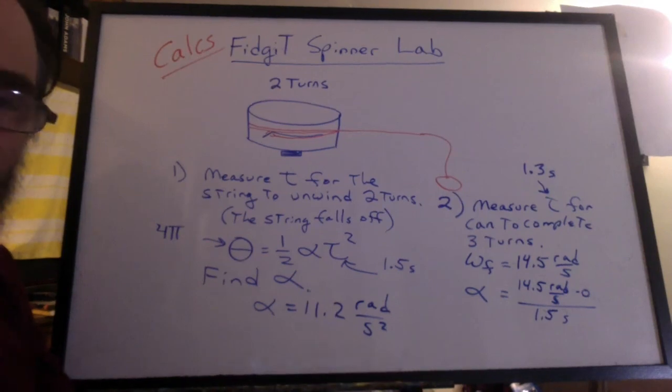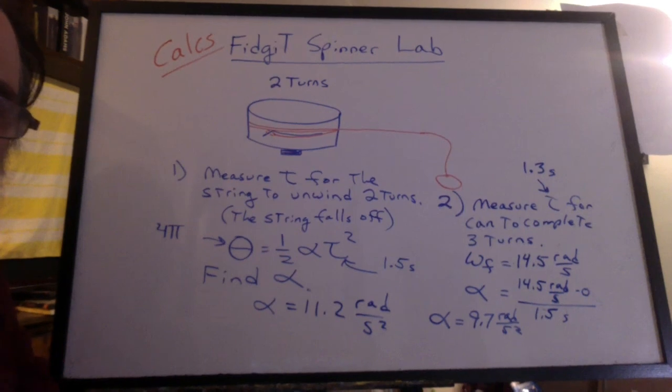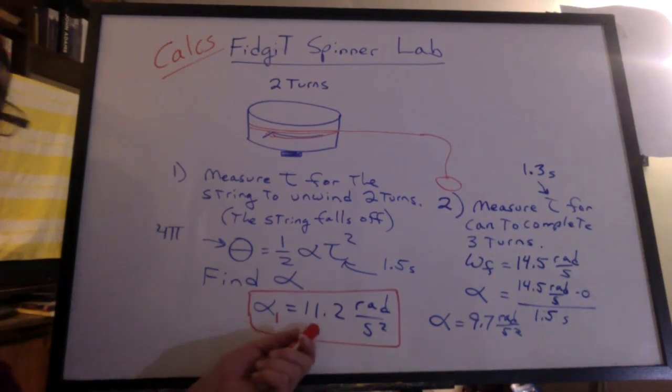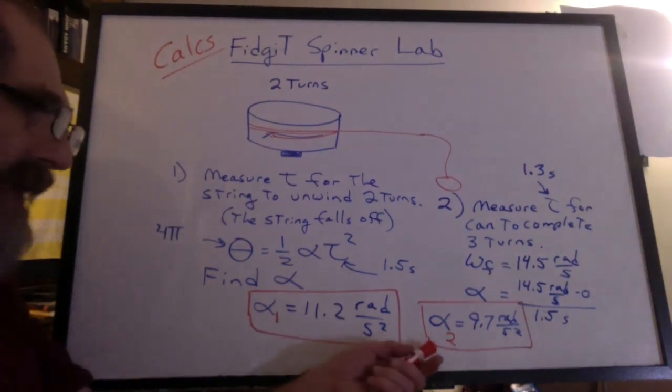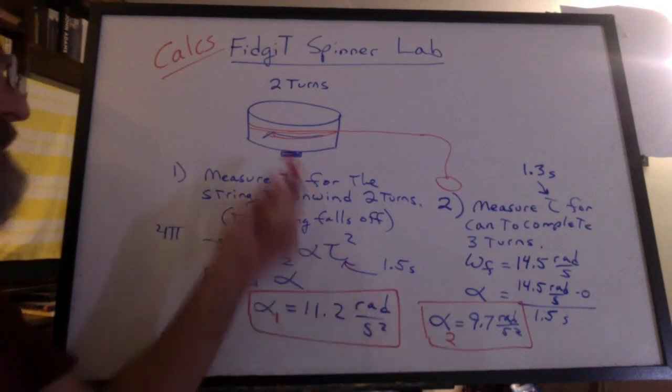Plugging in the numbers, we get 9.7 radians per second squared. That's the alpha for part one. This is the alpha found using part two. And they should be about the same. It's the same acceleration, just found two different ways.